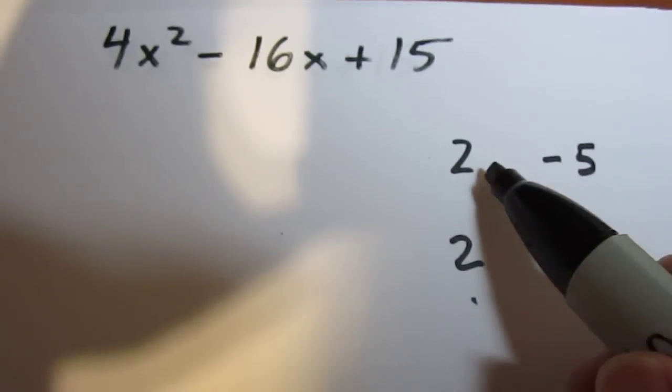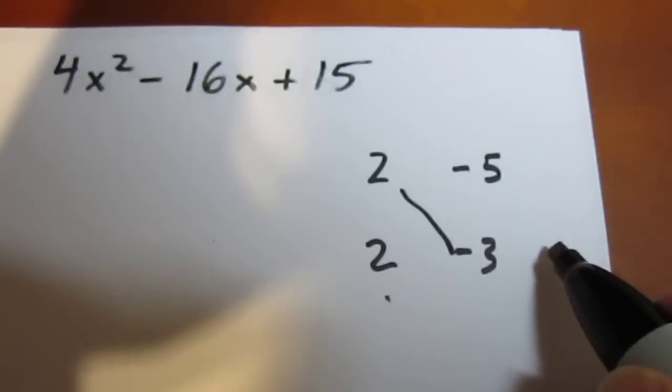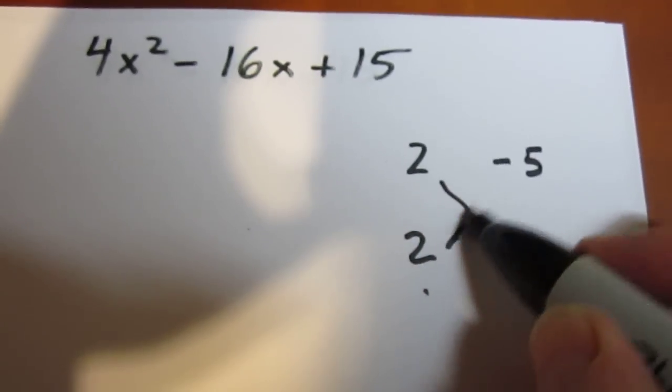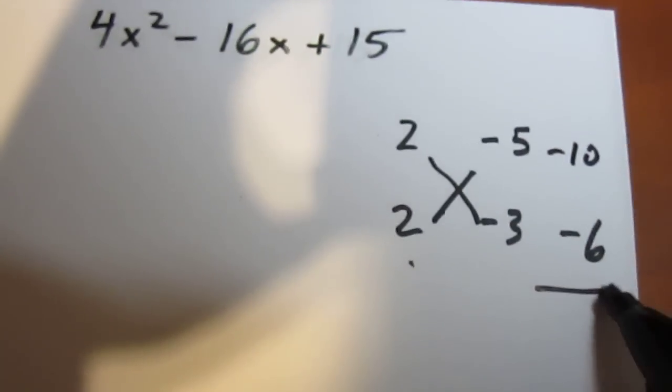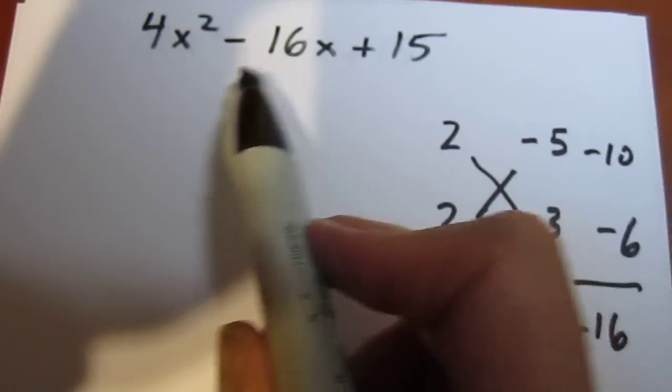So we then try our criss-cross. 2 times negative 3 is negative 6. 2 times negative 5 is negative 10. Negative 10 plus negative 6 is negative 16. We got what we want.